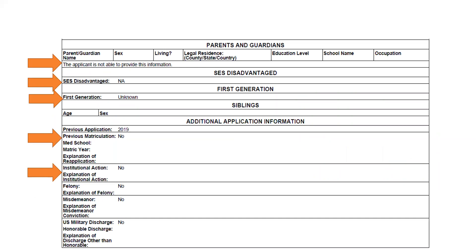This applicant does not have contact with their parents, doesn't know if they're a first-generation student, and is not able to list any siblings. This is also the section on previous matriculation and previous application. In previous application, the student did apply to our school the year before and has not matriculated to any other medical school. If they had, it would show what medical school they previously attended, the year they started, and why they're reapplying. They don't have any institutional actions, but if they did, they'd also get character-limited space to describe it — same with felonies, misdemeanors, and military.